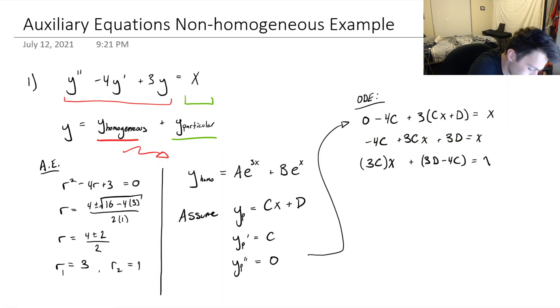So you'll notice here that 3C, this coefficient, if we want this, if our assumed solution, we want this to be a solution to the ODE, then we need this equation to hold true. So there's a hidden 1 here as the coefficient. So 3C must be equal to 1, or C must be equal to 1 third.